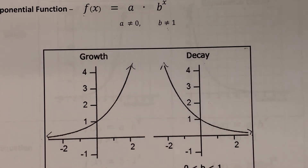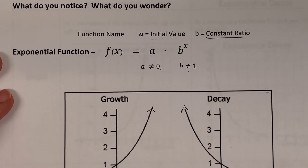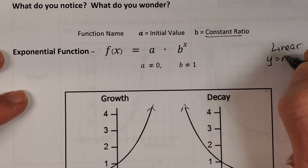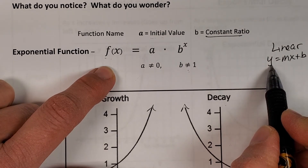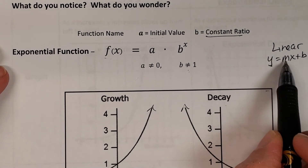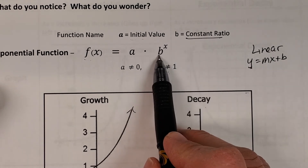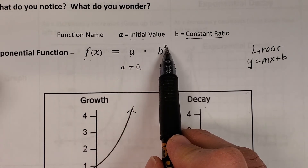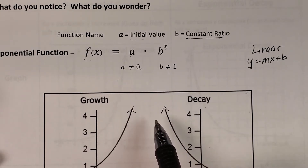An exponential function looks a bit different. Both linear and exponential have y and x, but the x behaves very differently. In linear, x is multiplied by a number. In exponential, x tells us how many times a number is being multiplied — x is the exponent. The form is y equals a times b to the x. The big tell on an exponential function is that x is the exponent.